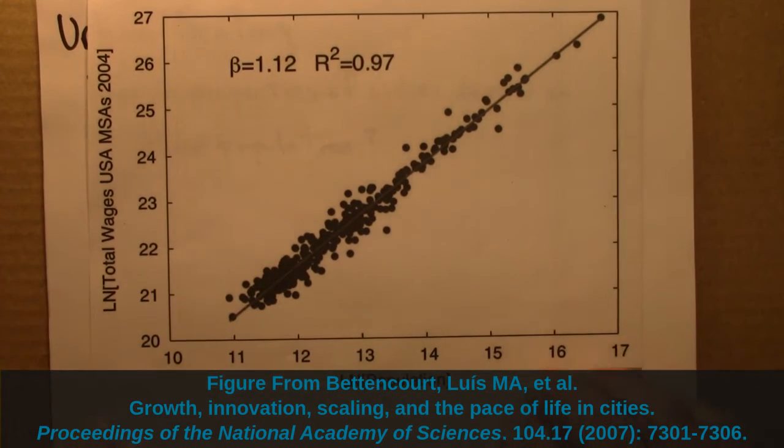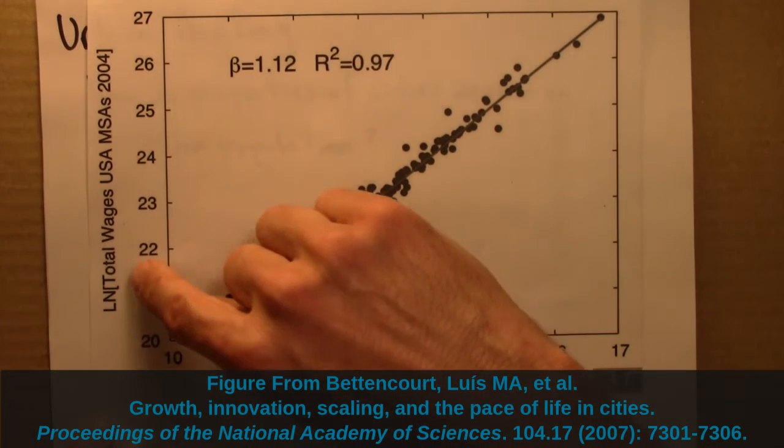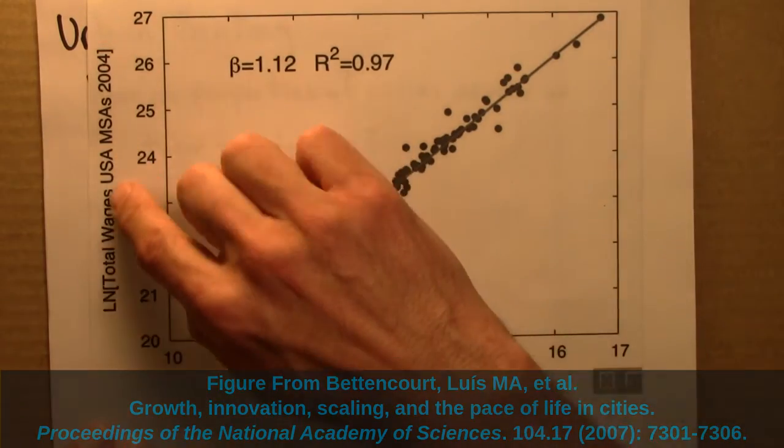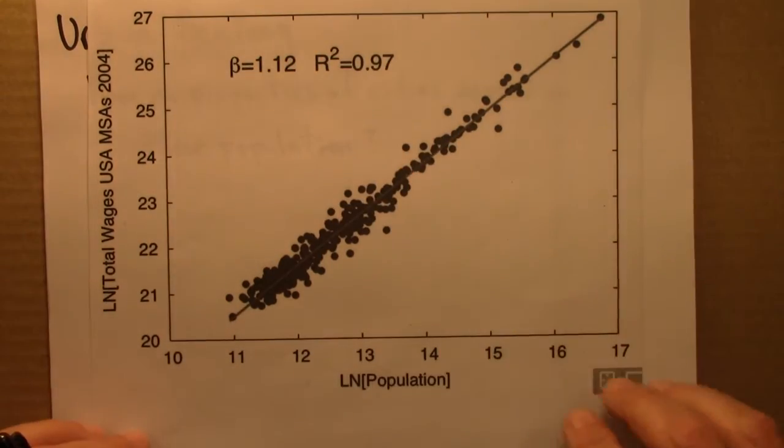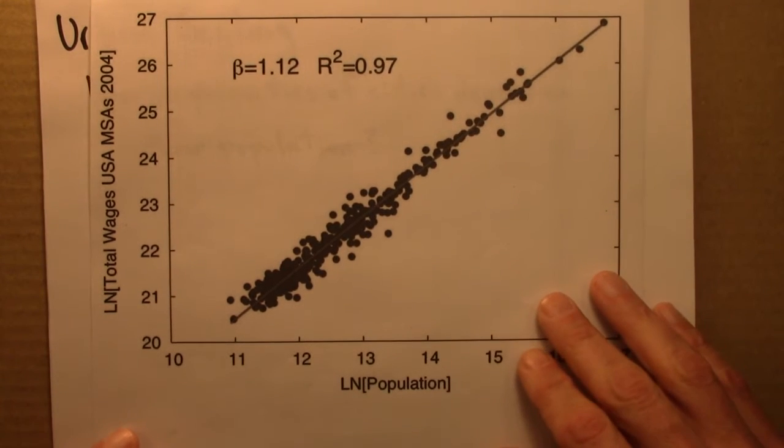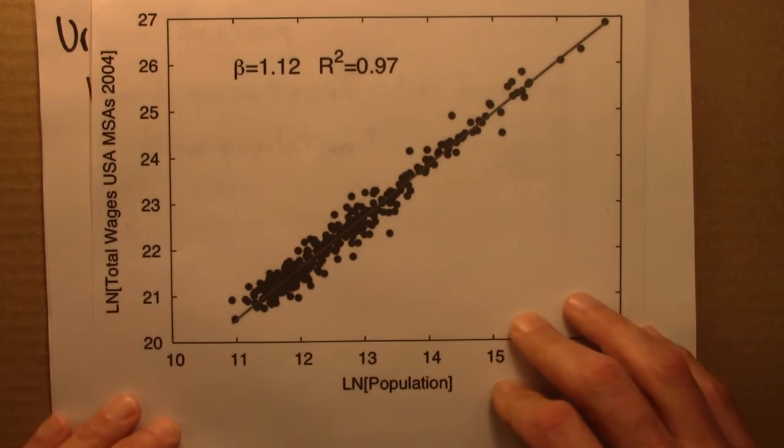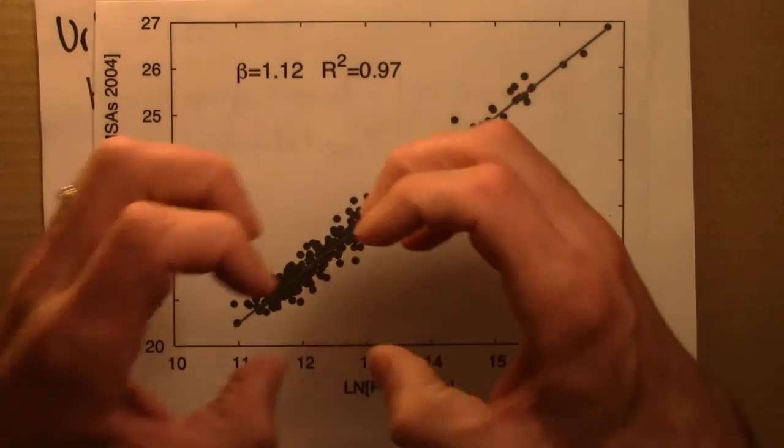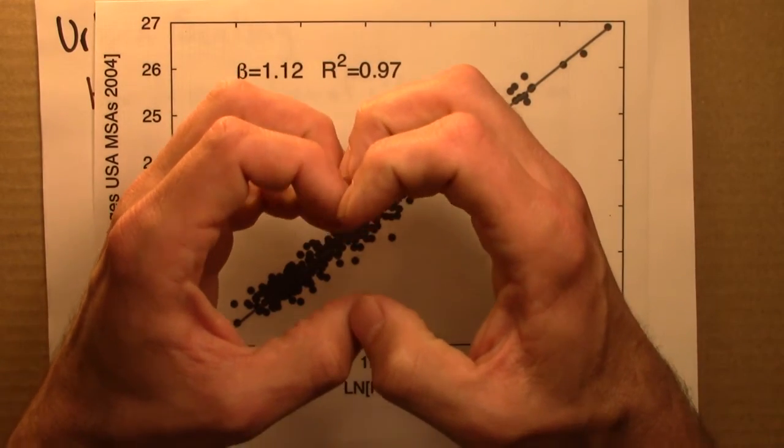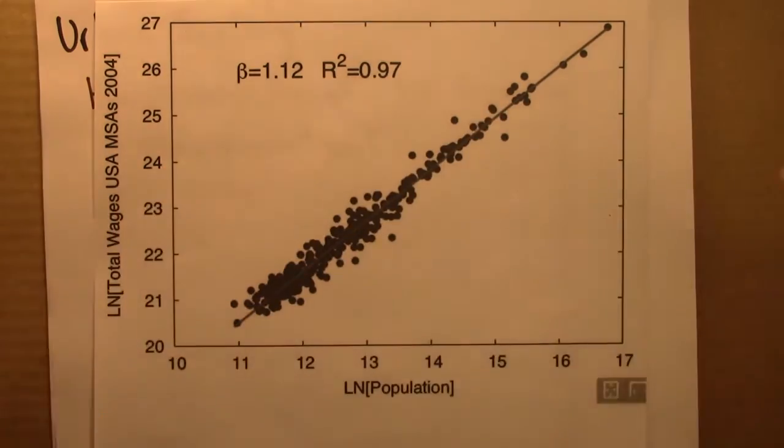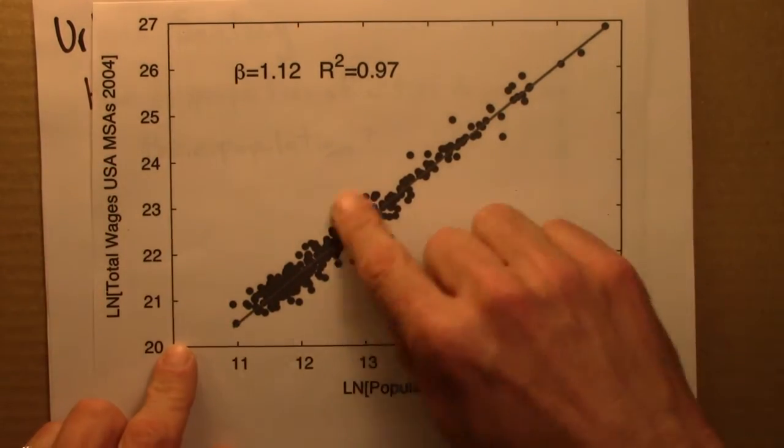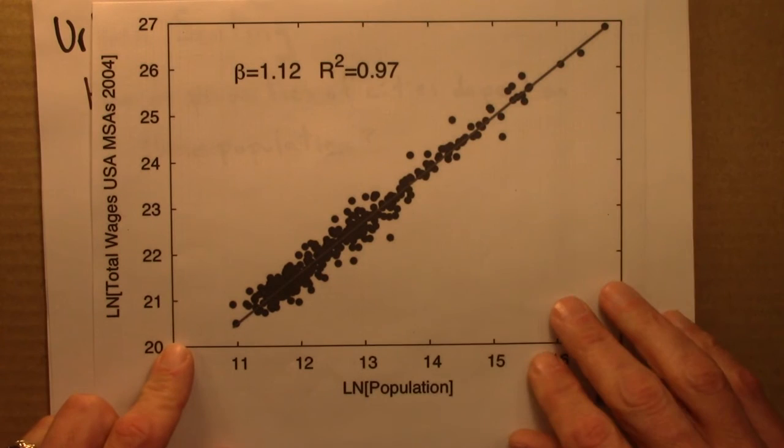So here's the first one. This is looking at population down here, and this is total wages, and these are for US cities. In this context, a city is taken to be a metropolitan statistical area, so it might not be exactly the same as a formal city boundary. It often might include suburbs. If you have two cities that are right next to each other, they'll be considered part of the same metropolitan area. So in any event, here's the data. I think we've got around 300 data points here.